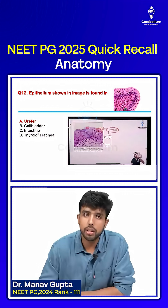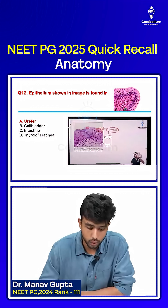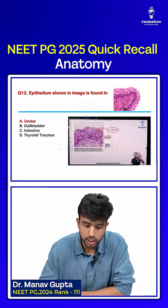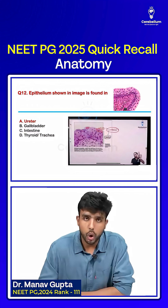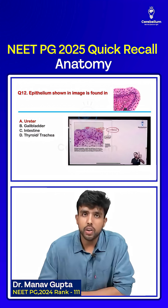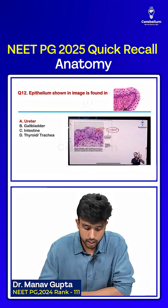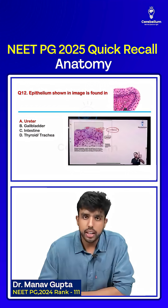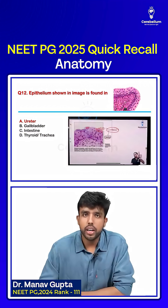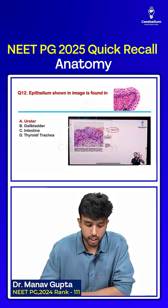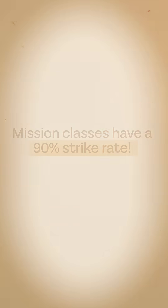The next question: a histopathological image was given and the question asked — the epithelium shown in the image is found in which of the following? Options: ureter, gall bladder, intestine, or thyroid. The correct answer is option A, ureter.